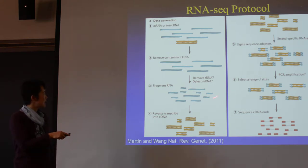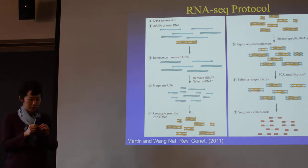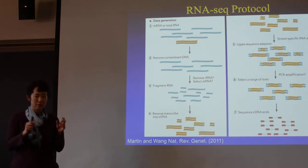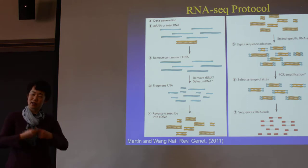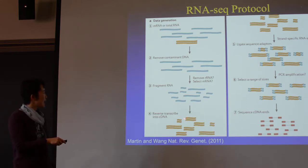And then you add magnesium to fragment the RNA in order to make them shorter. It's just the concentration causes the RNA to break into small fragments.